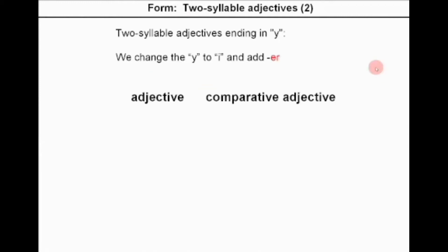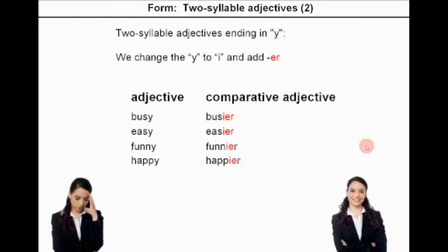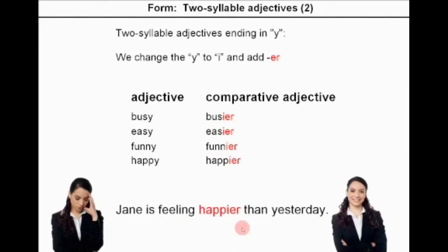For two-syllable adjectives ending in the letter Y, we change the Y to I and add ER. For example: busy → busier, easy → easier, funny → funnier, happy → happier. Example: Jane is feeling happier than yesterday.